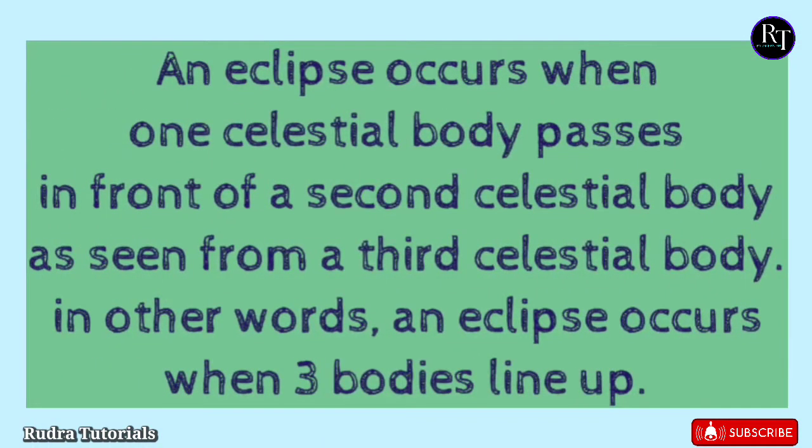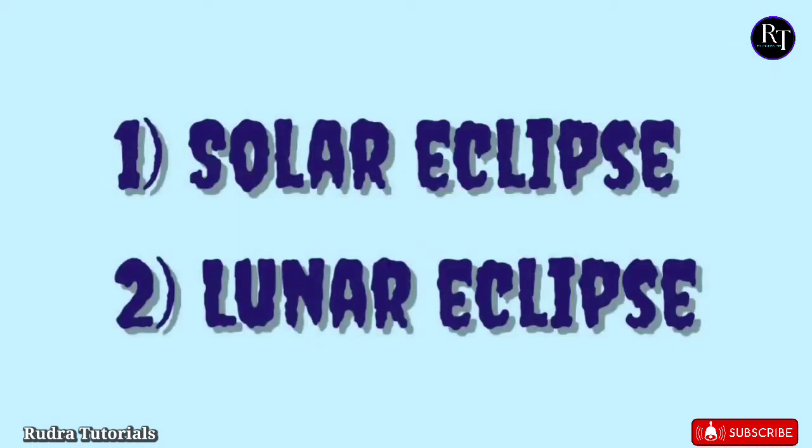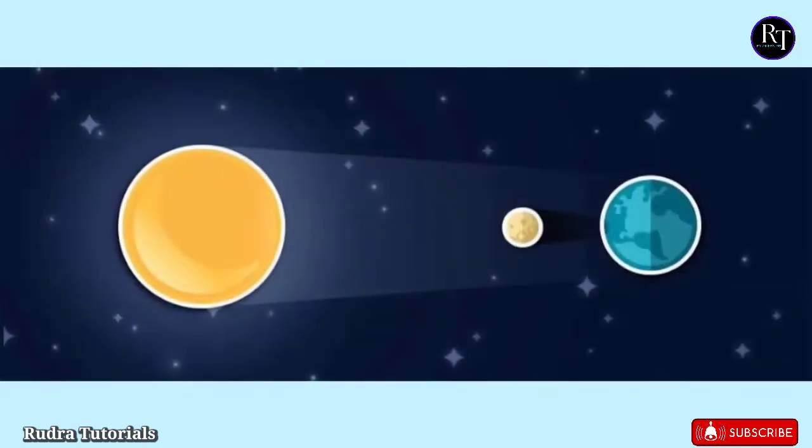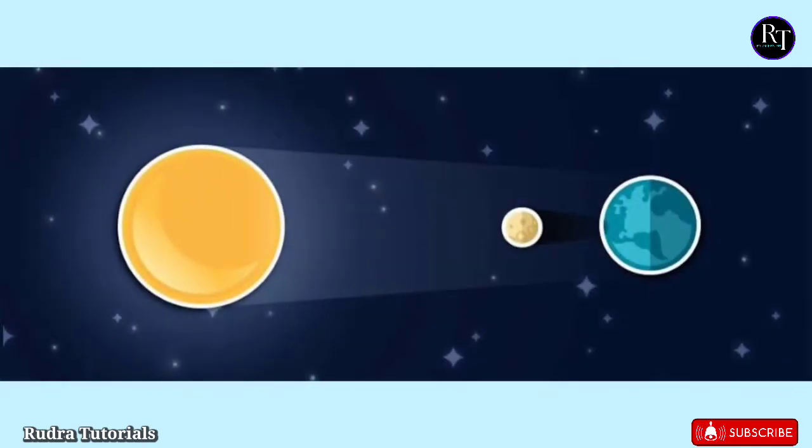Such shadows are called eclipses. Students, eclipses are of two types: first is solar eclipse and second is lunar eclipse. These eclipses happen only when the Sun, Moon, and Earth come in a straight line.